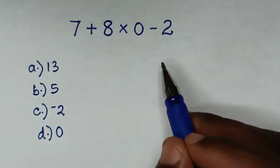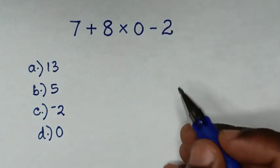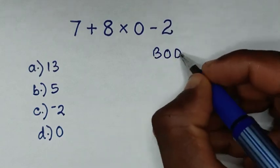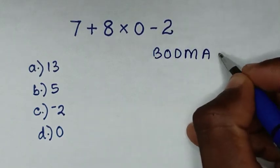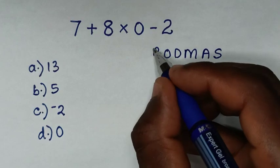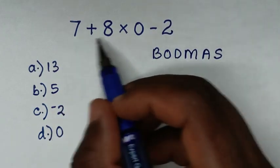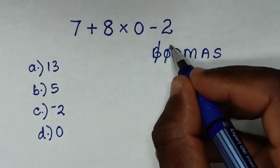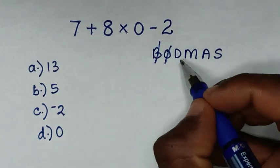From this math problem, let's solve it by using BODMAS rule. So we write the rule which is BODMAS, whereas B is bracket. In this problem, we don't have bracket. Also, we don't have order or exponents, and we don't have division.